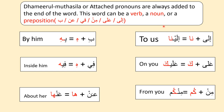We already learned attached pronouns with a verb and with a noun. Now we are learning dhamairul muttasila with a preposition. We know prepositions are: ila, ala, min, fi, and bi. Here we can see dhamairul muttasila with a preposition: na, ka, kum, hi, and ha. Ila plus na — ilayna — to us. Ala plus ka — alayka — to you. Min plus kum — minkum — from you. Bi plus hi — bihi — by him. Fi plus hi — fihi — inside him. An plus ha — anha — about her.